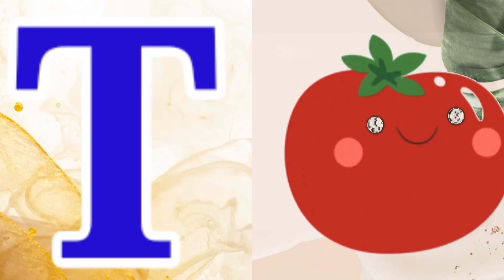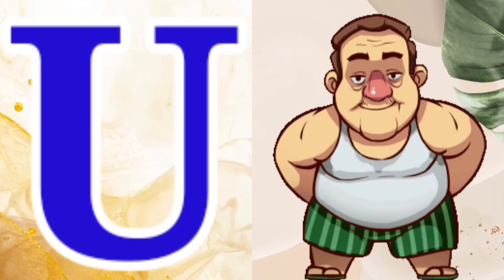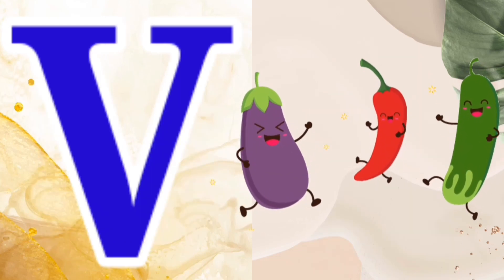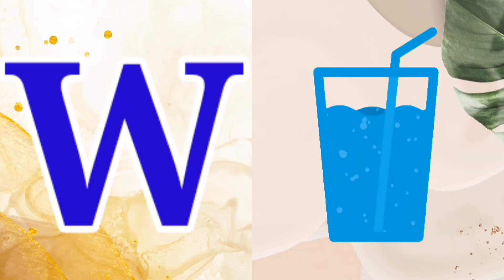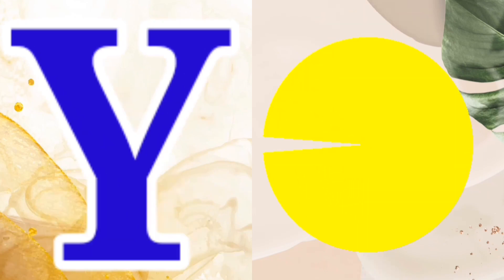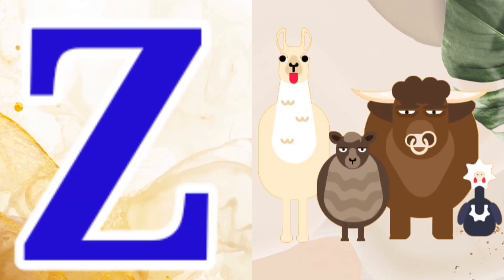T for Tomato, U for Uncle, V for Vegetable, W for Water, X for X-Ray, Y for Yellow, Z for Zoo.